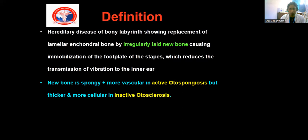Otosclerosis is synonymous with otospongiosis. A foci of otosclerosis contains decreased resorption of the bone with increased new bone formation, along with some connective tissue and vascular proliferations. These things cause the immobilization of the stapes which leads to conductive deafness. It is mainly an autosomal dominant disorder characterized by the formation of a spongy bone which causes immobilization or fixation of the footplate, which reduces the transmission of sound from the external ear into the inner ear.